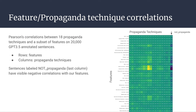Our work shows that the features we have identified are a promising direction in propaganda technique detection, even in light of the fact that the annotations are very noisy. In particular, looking at the non-propaganda column on the right, it's clear to see that our features are negatively correlated with sentences labelled as non-propaganda.